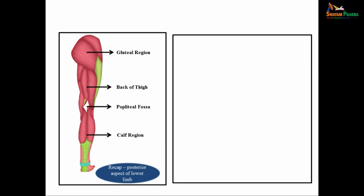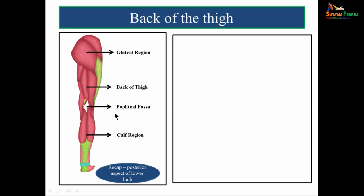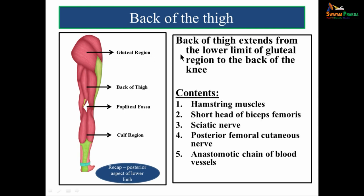Before going to the boundaries, let us have a small recap on the muscles of the posterior aspect of the lower limb. The posterior aspect is divided into the gluteal region, the back of the thigh, and the calf region. Behind the knee joint is the diamond-shaped popliteal fossa. The back of the thigh extends from the lower limit of the gluteal region to the back of the knee. Its contents include hamstring muscles, biceps femoris, sciatic nerve, posterior femoral cutaneous nerve, and an anastomotic chain of blood vessels.